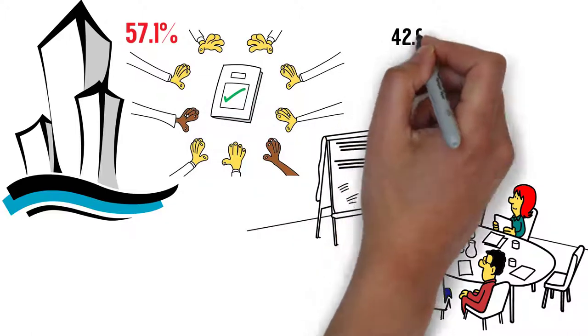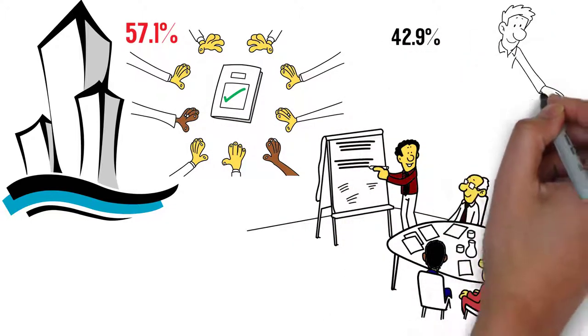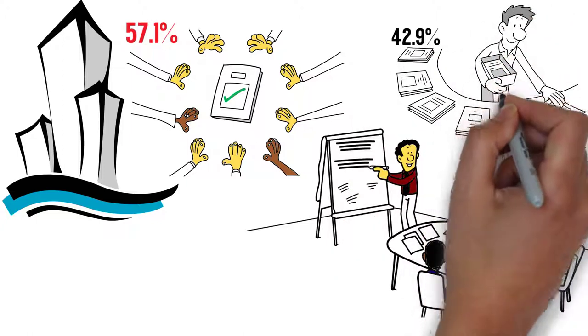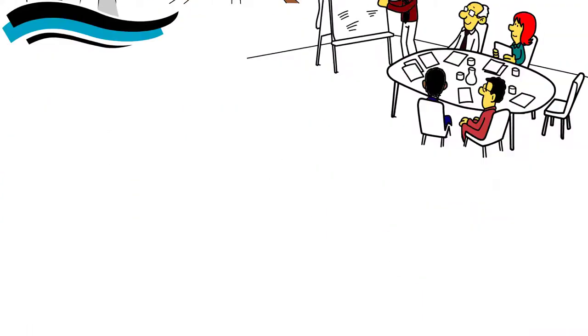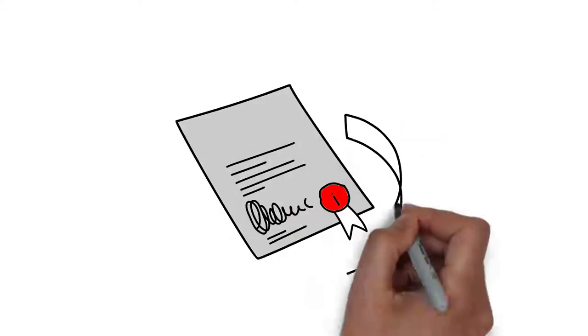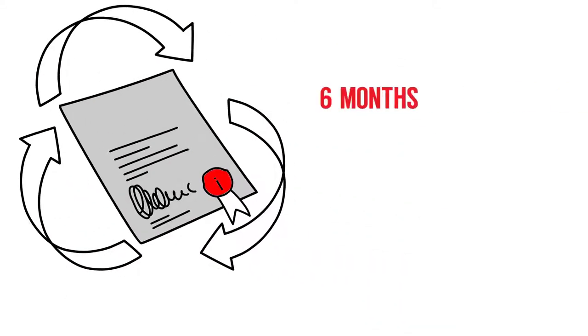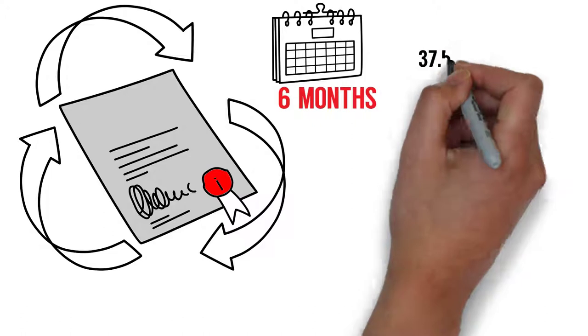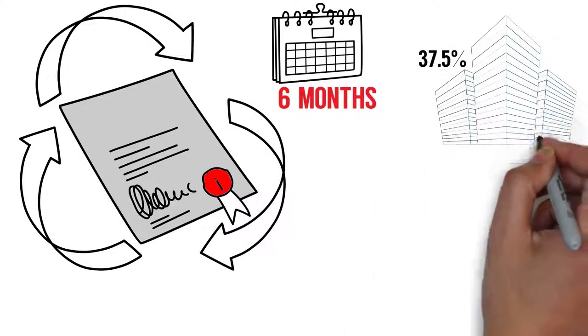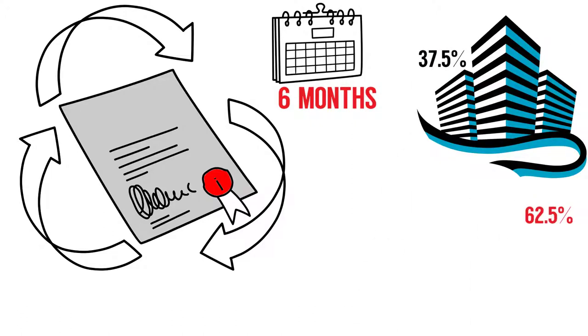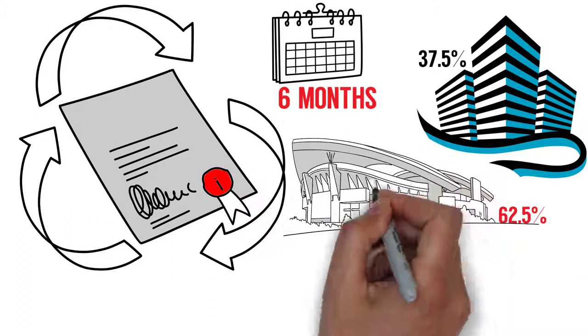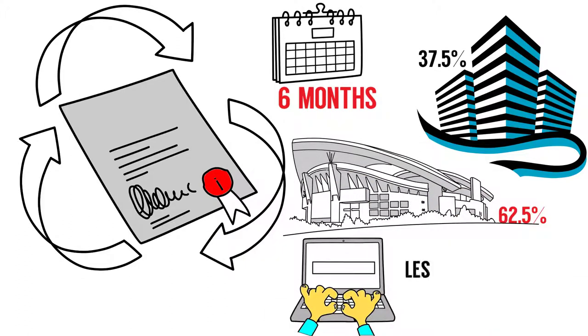42.9% of all analyzed organizations have published relevant information that is available with the possibility to be traced over time. The information is updated at least every six months only by 37.5% of all analyzed organizations, while 62.5% of analyzed sport structures update their websites less regularly or even do not update the website at all.